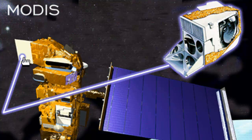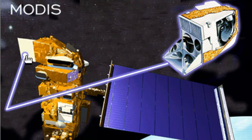Welcome back to Remote Sensing Applications using ArcGIS. This week we'll be working with data from a sensor called MODIS, which stands for the Moderate Resolution Imaging Spectroradiometer. It's onboard two satellites: a NASA satellite named Terra and a second NASA satellite named Aqua.